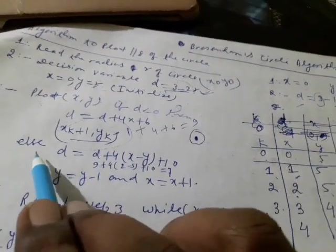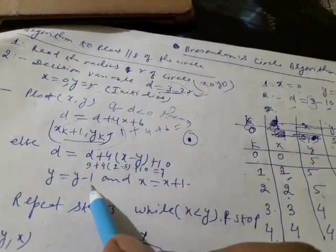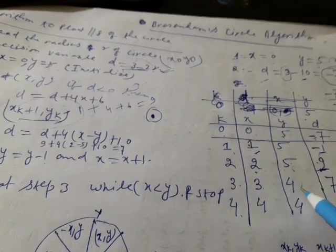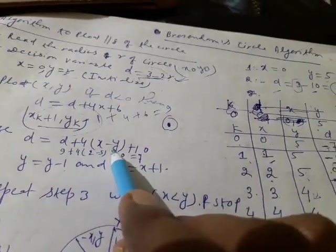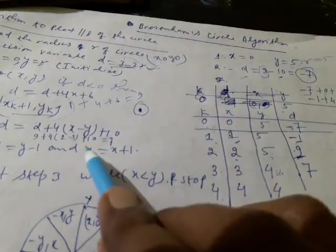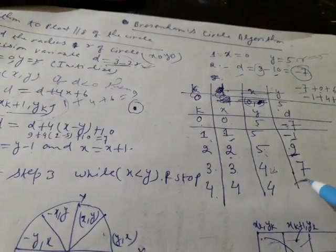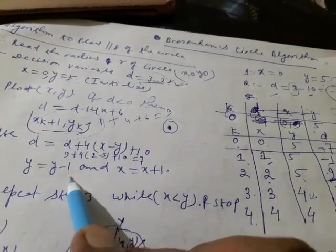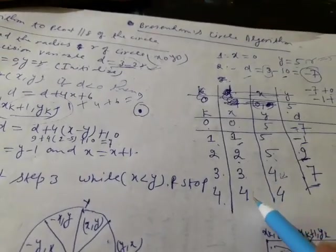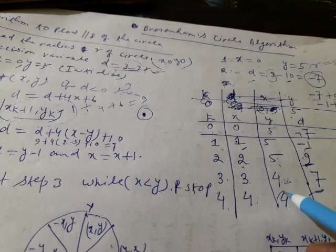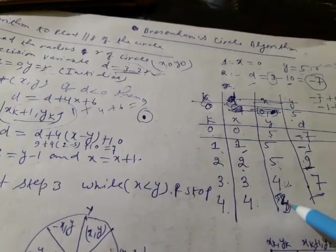Since 9 is positive, the else part applies: we decrease y by 1 and increase x by 1. Now x becomes 2 and y becomes 4. We calculate the next d: using 9 as the previous parameter, with x equal to 2 and y equal to 5, the result is 7. Since 7 is also positive, we again decrease y by 1 and increase x by 1, giving x equals 3 and y equals 3.